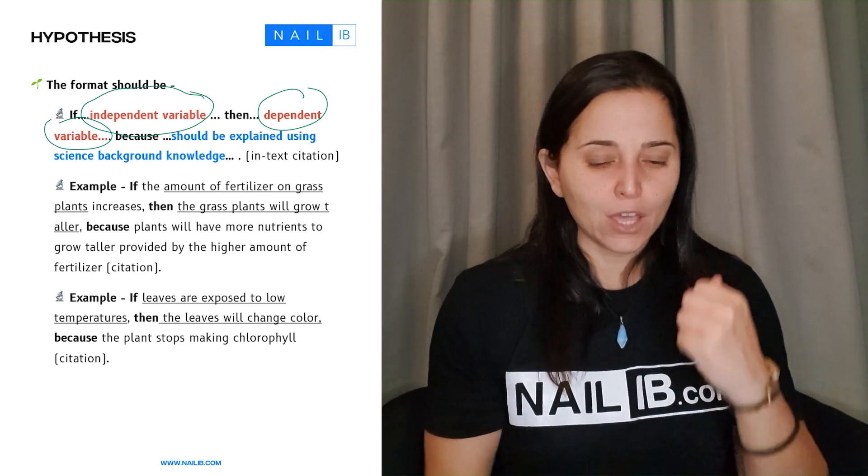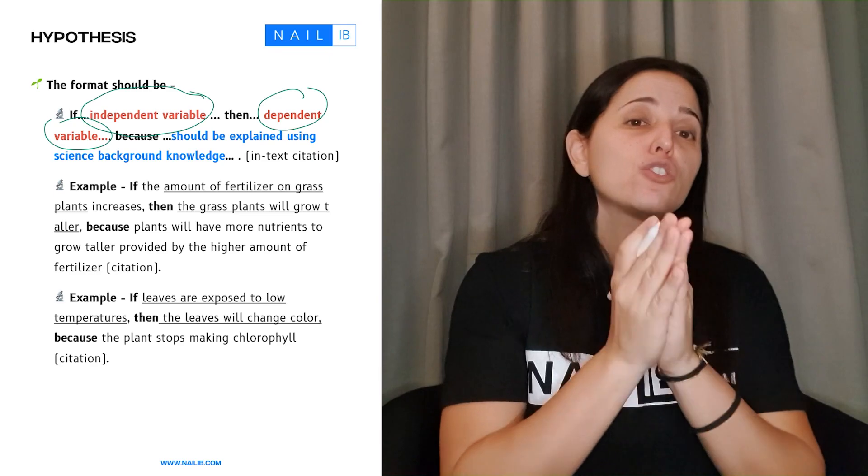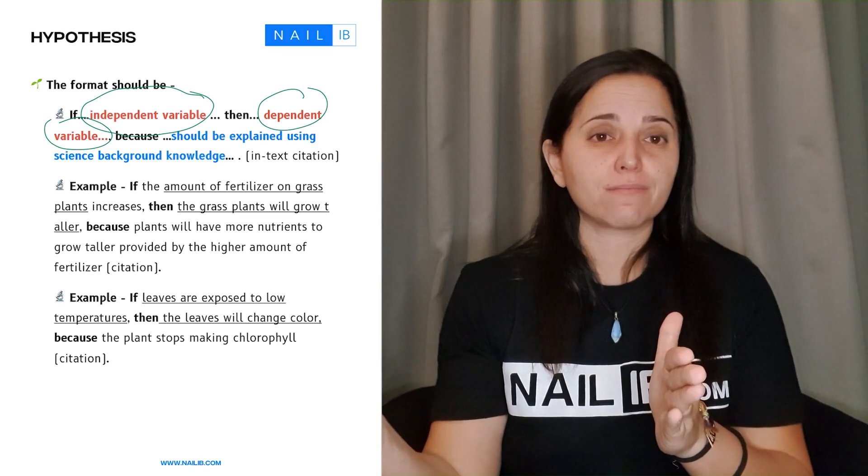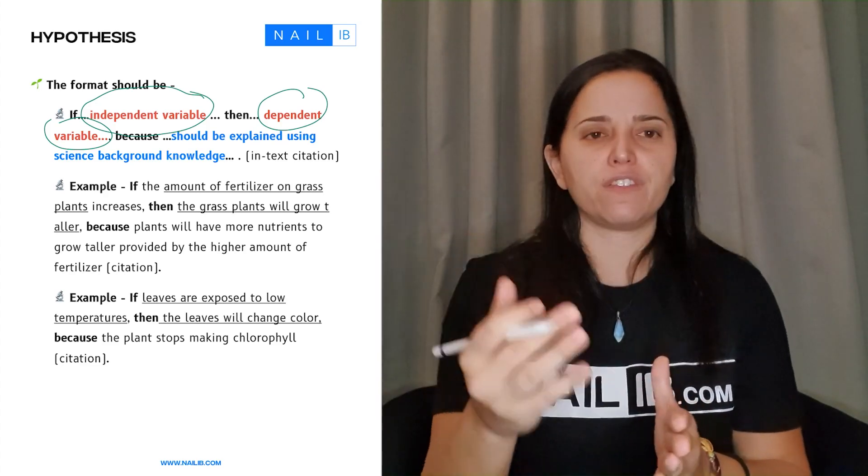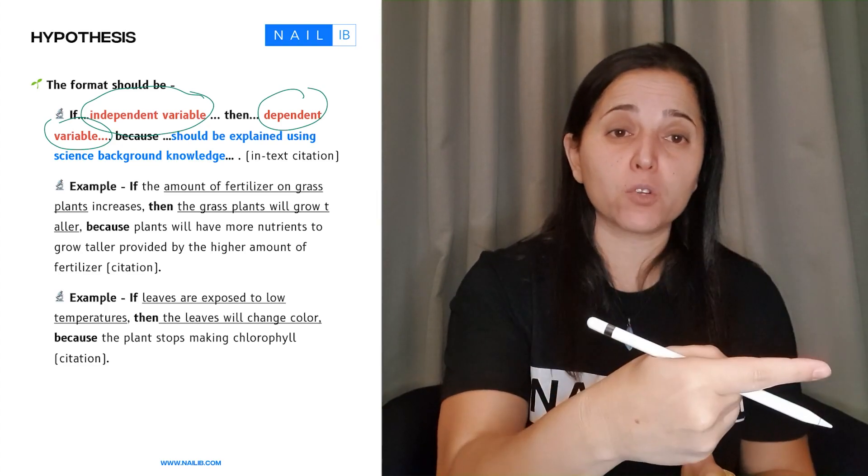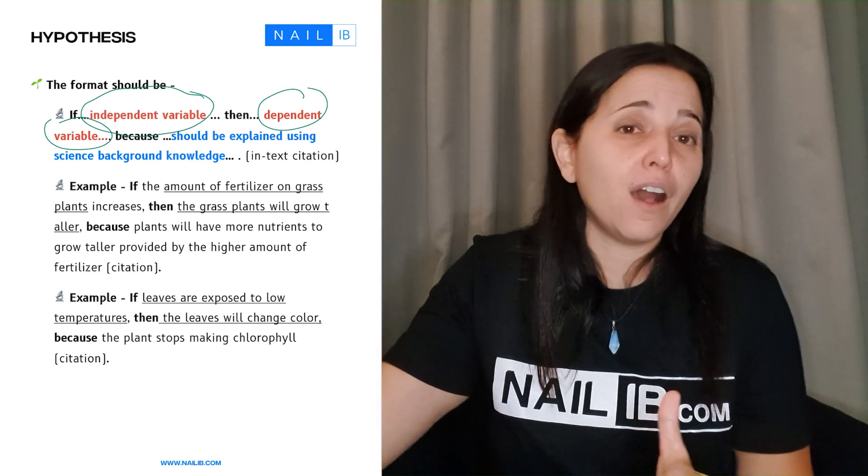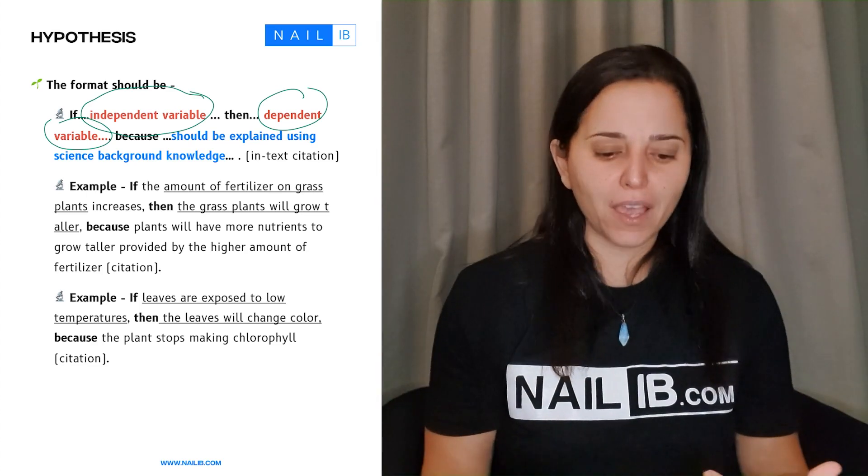So whenever you have a hypothesis, the if and then, students usually forget to put the because. The because is the scientific information. Like, why did you come up with the if and then? Why? What is the logic? Why did you think that the temperature, by increasing the temperature, will increase the rate of reaction of an enzyme? That's the because. You have to explain it.